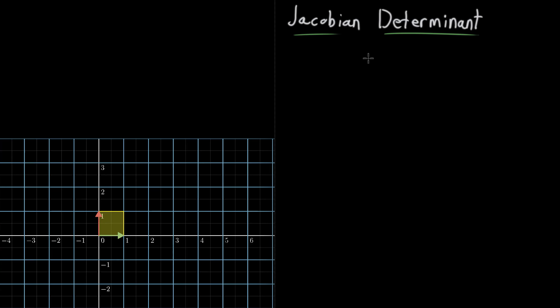Before we jump into it, I want to give a quick review of how you think about the determinant itself, just in an ordinary linear algebra context. So if I'm taking the determinant of some kind of matrix, let's say 3, 0, 1, 2, something like this.